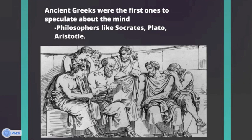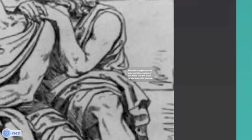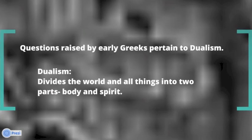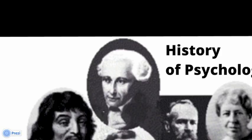Where did philosophy begin? Ancient Greeks were the first ones to speculate about the mind — philosophers like Plato, Aristotle, and others. Aristotle's application of logic and observation of the world laid the basis for the scientific method, which we know is very important today. Questions raised by early Greeks pertain to dualism — a philosophy that believes that the world and all things are divided into two parts: body and spirit.